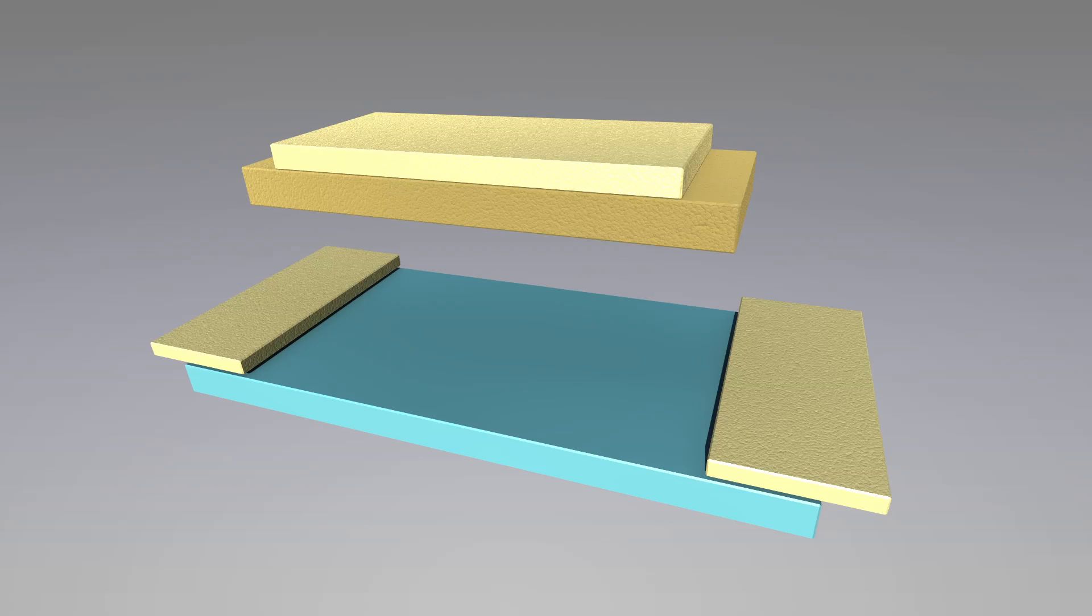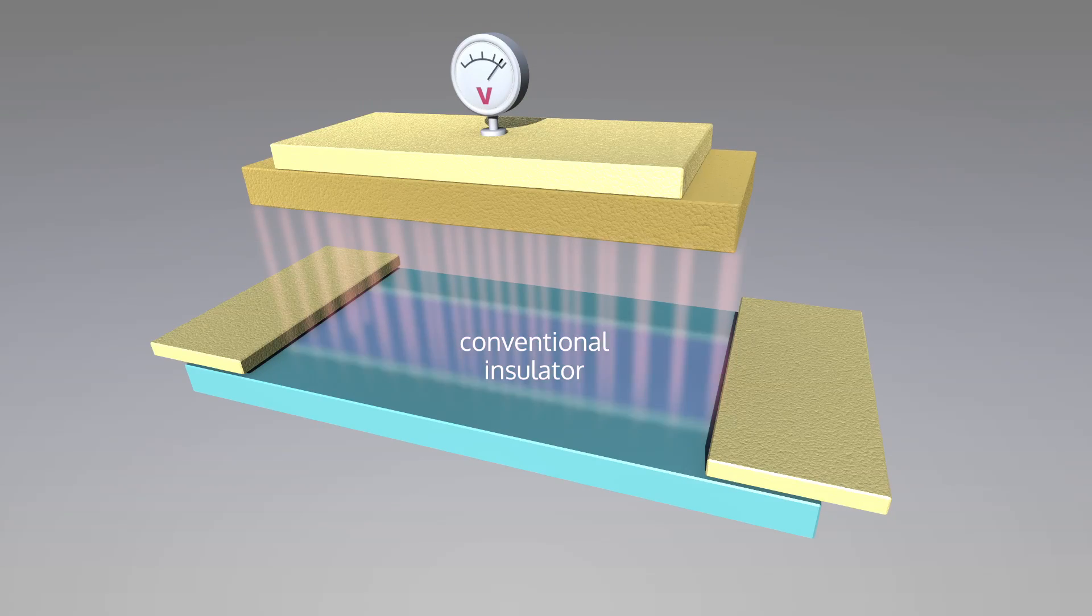Fleet will create a topological transistor in which a gate electrode switches a material from a conventional insulator to a topological insulator. The topological edges will carry current from source to drain without resistance.